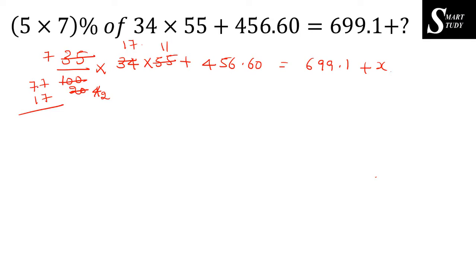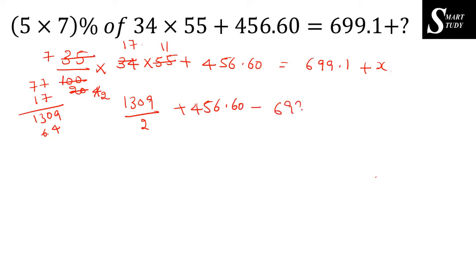Calculating 77 into 17: 7 into 7 is 49, carry 4; 7 into 7 is 49 plus 4 is 53, plus 4 carried is 60 — giving 1309 in the numerator over 2, which is 654.5. So 654.5 plus 456.60 minus 699.1 equals x. Adding 654.5 and 456.60: 600 plus 400 is 1000, plus 50 plus 50 is 1100, plus 4 plus 6 is 1110, plus 0.5 plus 0.6 is 1.1, giving 1111.1.